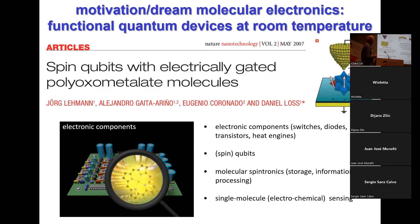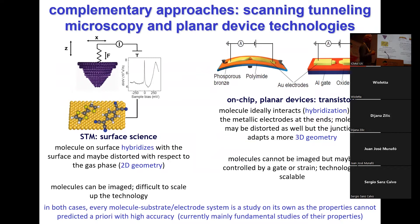If you look from a distance, there are two approaches to address a single molecule: STM, and the planar devices that I will be discussing. In the STM, which is the field of surface science, you have a molecule on a surface. It's very important to realize that this molecule interacts with this surface — it hybridizes, so the wave functions overlap. The molecule is also most likely distorted, and it may not have the same properties as the molecule in the gas phase.